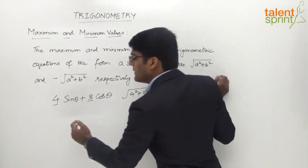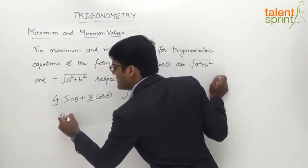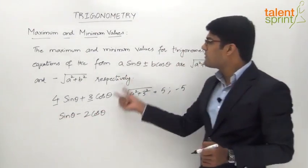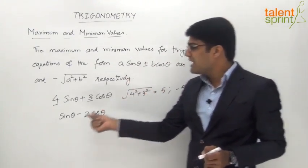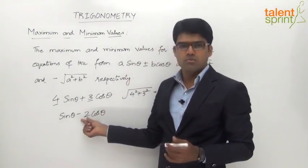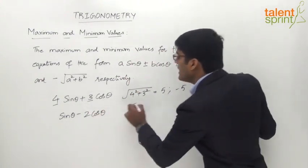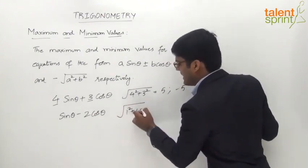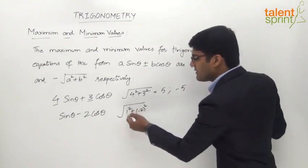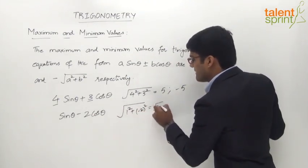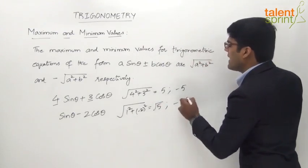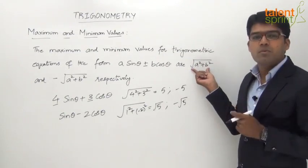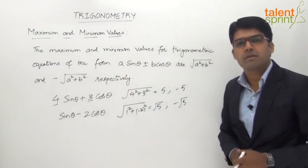Likewise, let us say the given trigonometric equation is sinθ − 2·cosθ. This is also of the form a·sinθ − b·cosθ. Here a = 1 and b = 2. The maximum value is √(a² + b²) = √(1² + 2²) = √(1 + 4) = √5, and the minimum value will be −√5. The only difference between maximum and minimum is that maximum is +√(a² + b²) and minimum is −√(a² + b²).